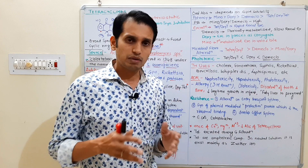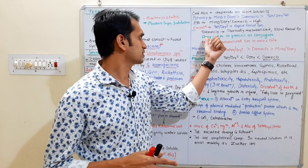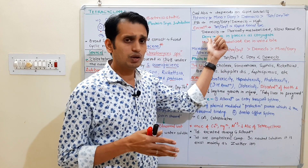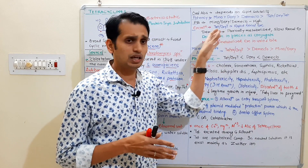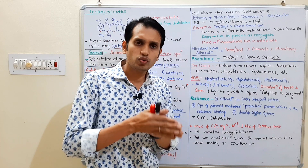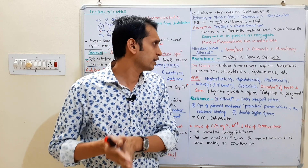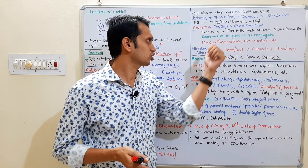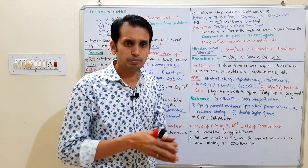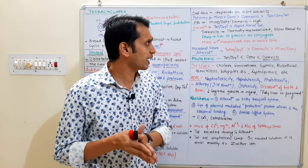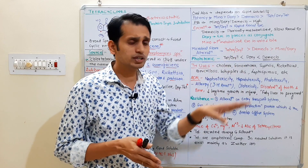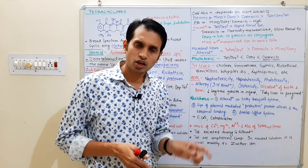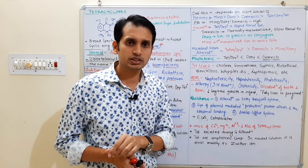Doxycycline is excreted through the feces. Minocycline is primarily metabolized in the liver and excreted in both urine and bile.